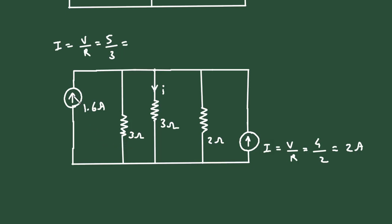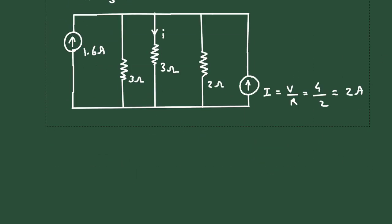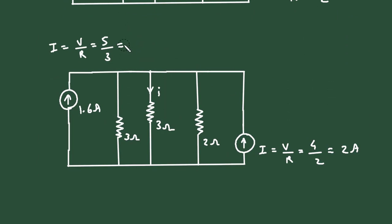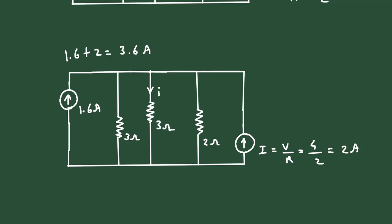As we can see, this current source and this current source are connected in parallel. The direction of both current sources is upward, so both directions are the same — we will add them and make a single current source. It will be 1.6 plus 2, which equals 3.6 Ampere. We can erase this current source now.